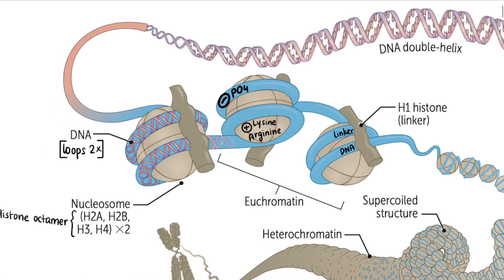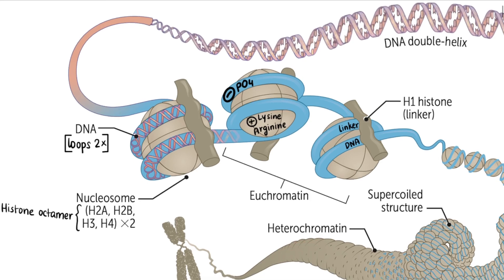You can think about the prefixes 'eu' and 'hetero' in terms of whether chromatin is transcriptionally active or inactive. 'Eu' means truly — so euchromatin is truly active, meaning transcription occurs. Heterochromatin has no transcription happening. You need an open structure for transcription enzymes to bind, so euchromatin is transcriptionally active.